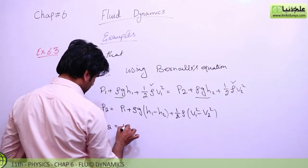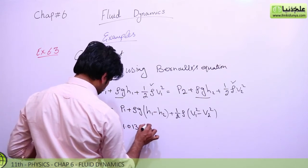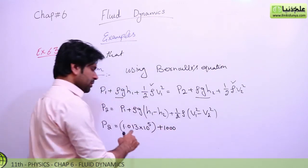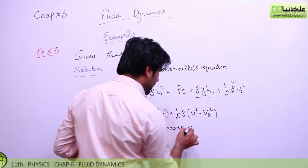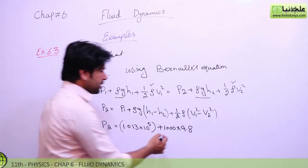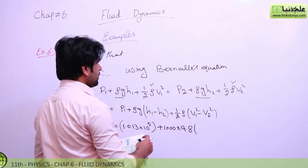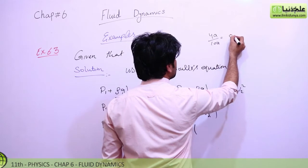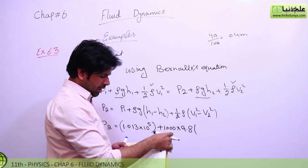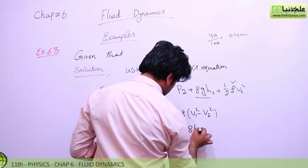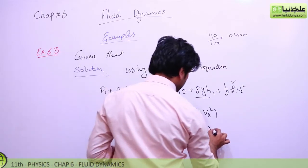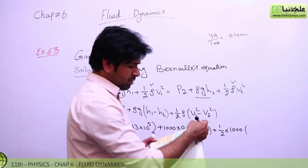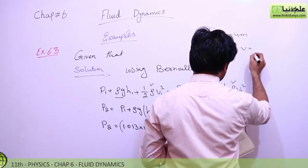Substituting values: p1 = 1.013 × 10⁵ pascal, ρ = 1000 kg per meter cube, g = 9.8 m/s². The height difference is given as 40 centimeters; converting to meters by dividing by 100 gives 0.4 meter. We write the length of the funnel as 0.4 meter.